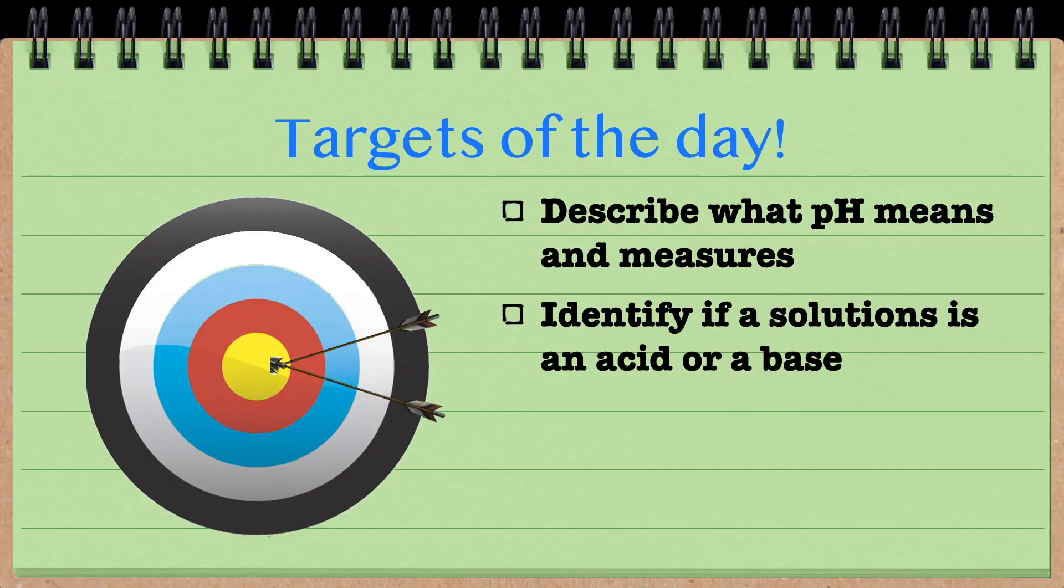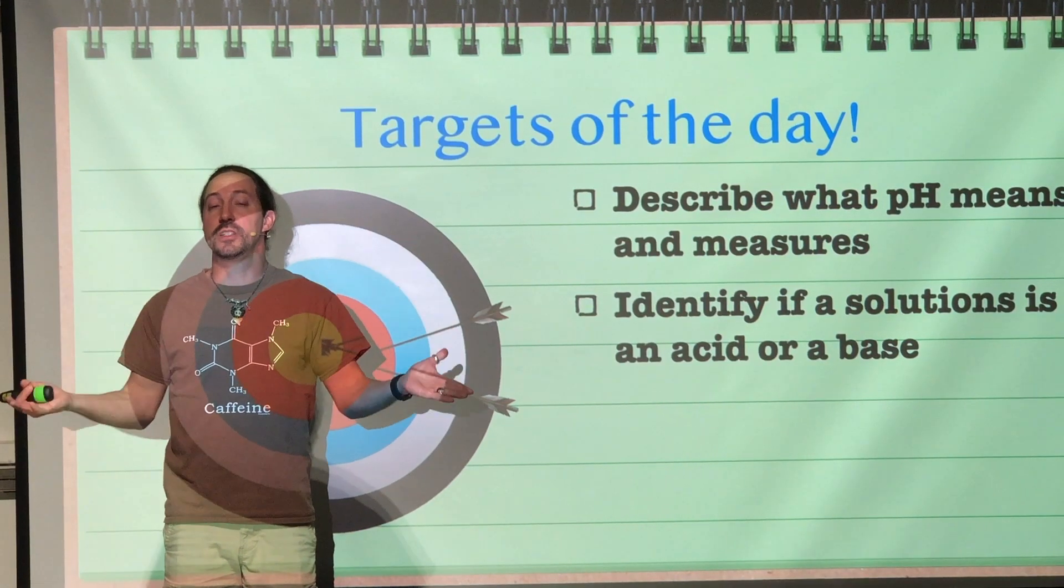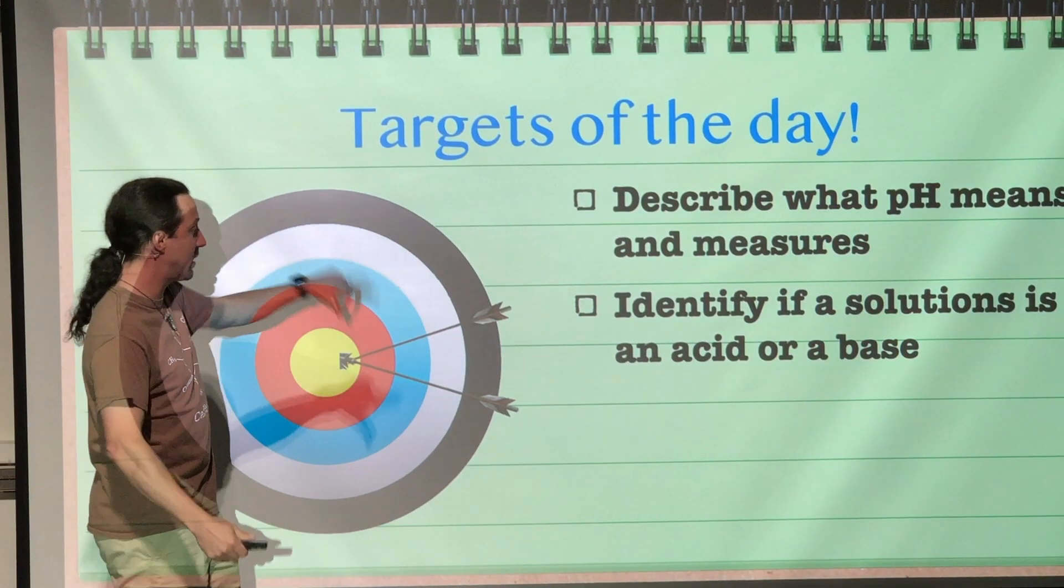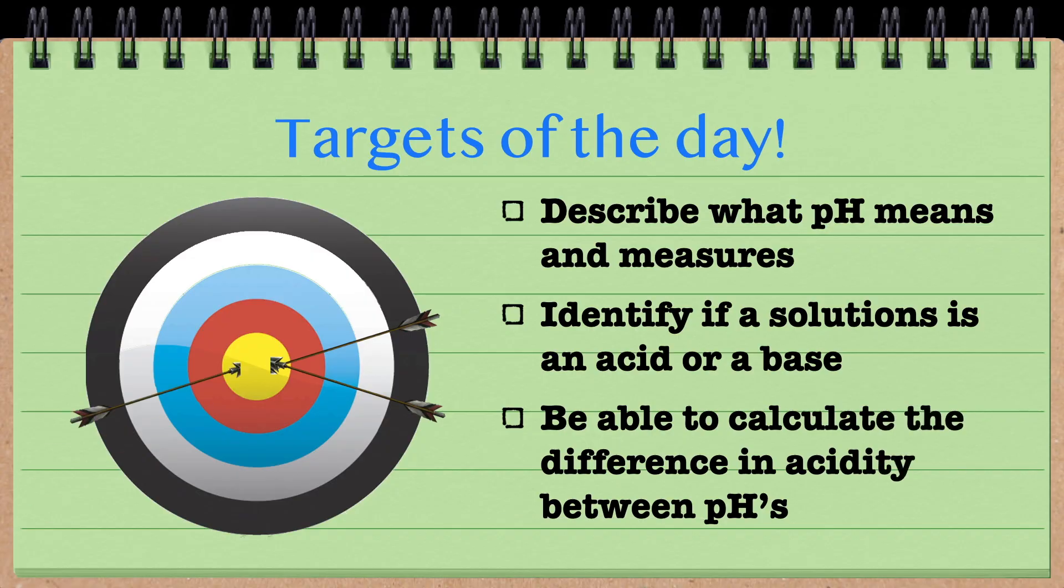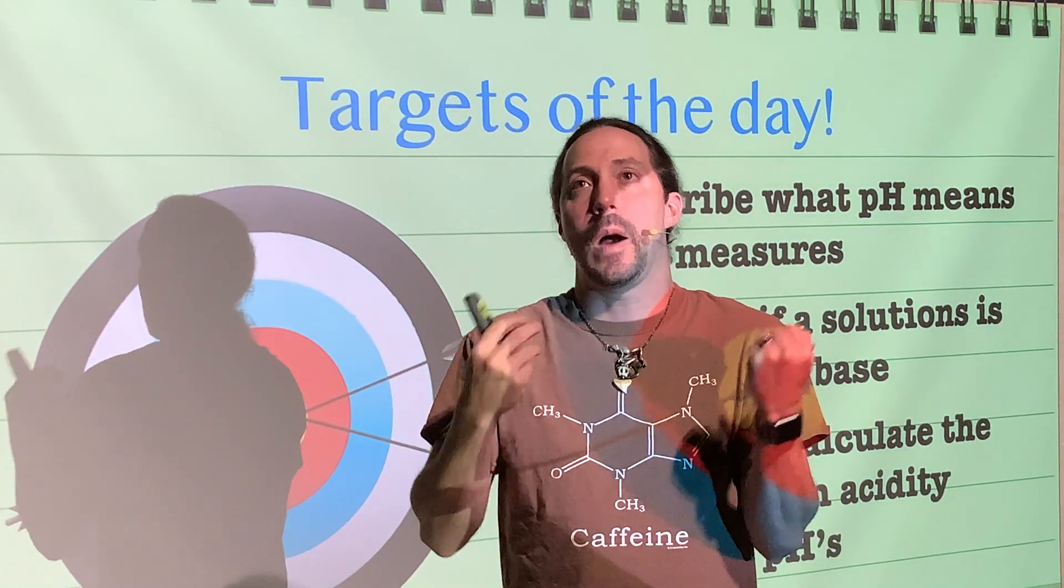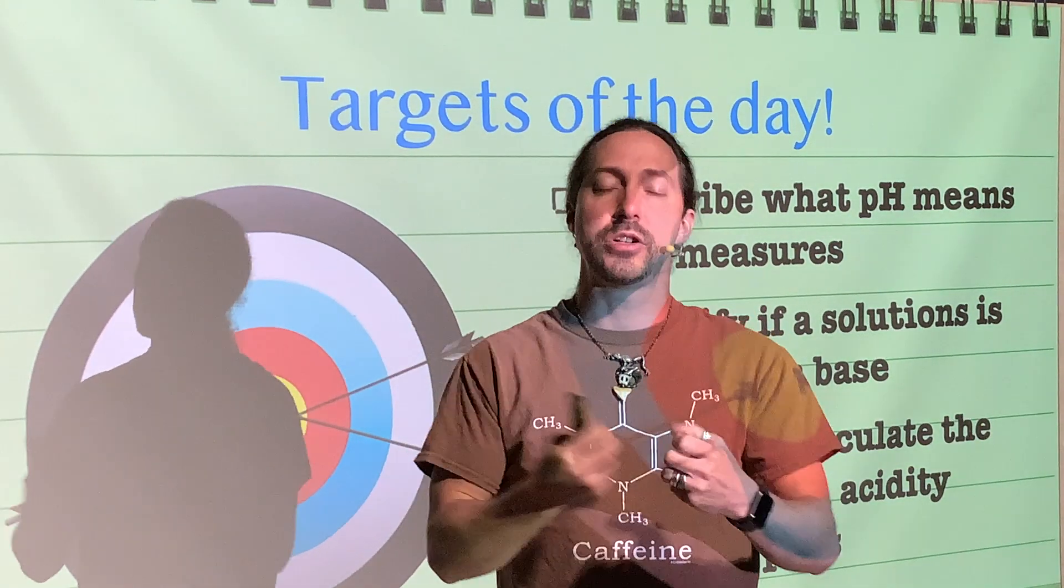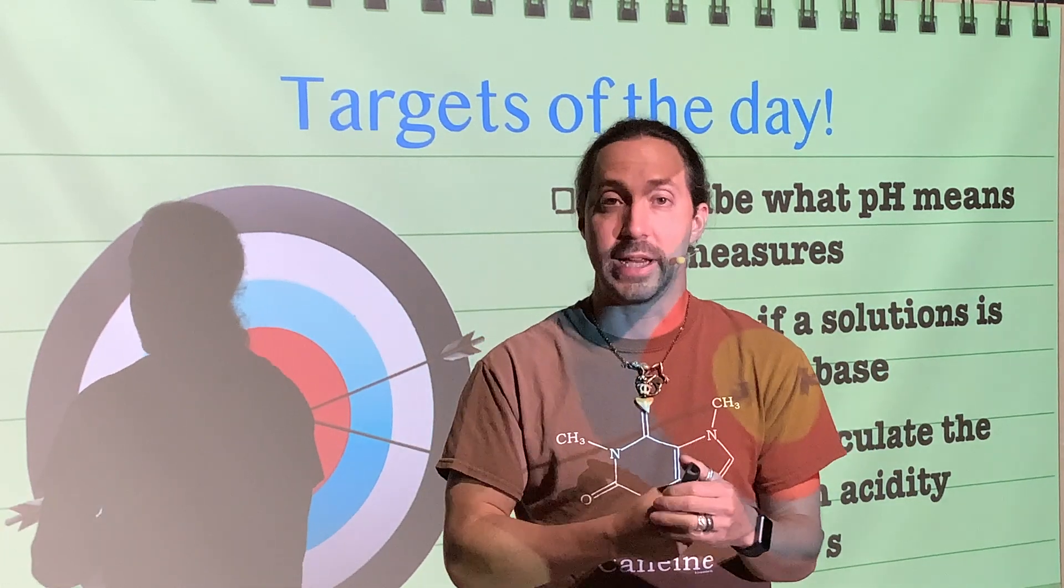Next is identifying if a solution is an acid or if it is a base. Clearly then, pH must have something to do with measuring acids or bases, which it does. And lastly for today is we're going to calculate something. We have to be able to calculate what the difference in pH actually means. How does a pH of 3 compare to a pH of 4, for example. That is something that we're going to be looking at at the end.